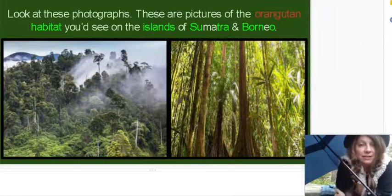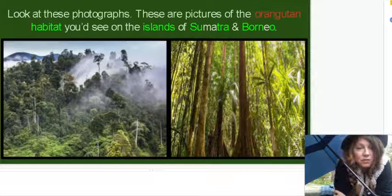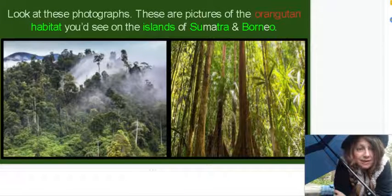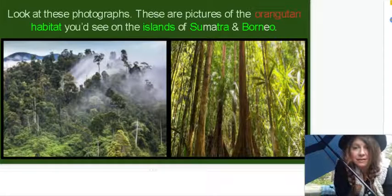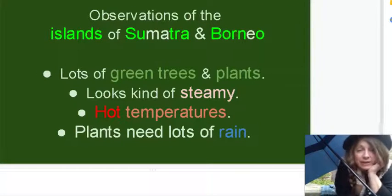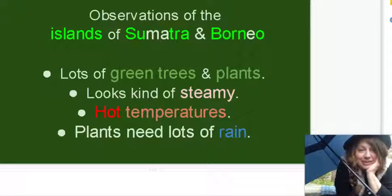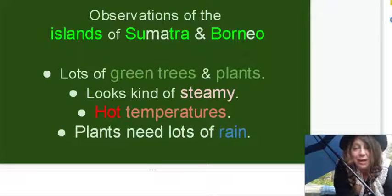Taking a closer look at our orangutans' habitats, take a look at these two photographs. Use your powers of observation. What do you notice about the habitat of an orangutan? Some observations that I have made of Sumatra and Borneo: there's lots of green trees and plants all over wherever you look. It looks kind of steamy, and it feels kind of steamy. In order for it to be steamy, we know it's got to have very hot temperatures. And when we have hot temperatures and steamy air, we know that there's lots of rain. And of course, plants need lots of rain.